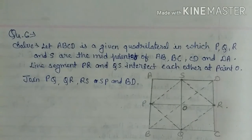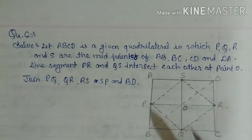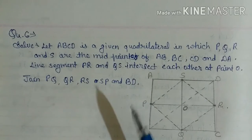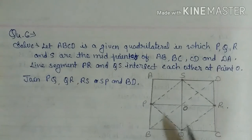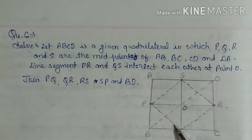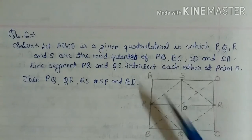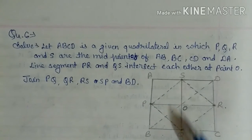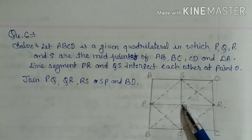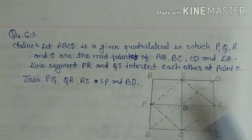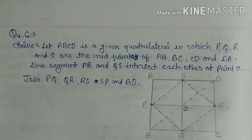So according to the question, at first we will draw a quadrilateral. In this quadrilateral, ABCD is a given quadrilateral in which P, Q, R and S are the midpoints of AB, BC, CD and DA. Line segments PR and QS intersect each other at O. Now join PS, SR, RQ, QP and BD.